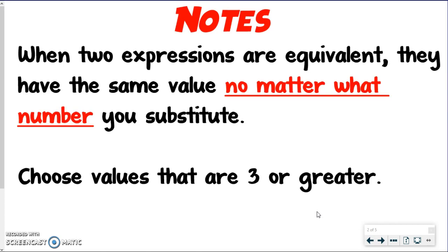So we're going to stick with whole numbers, even though we could choose a decimal if we wanted to, or a fraction, or even a negative number. But we're also going to choose values 3 or greater, because if you use 0, 1, or 2, sometimes two expressions can seem equivalent when they really aren't, just because 0, 1, and 2 tend to be a little bit trickier.